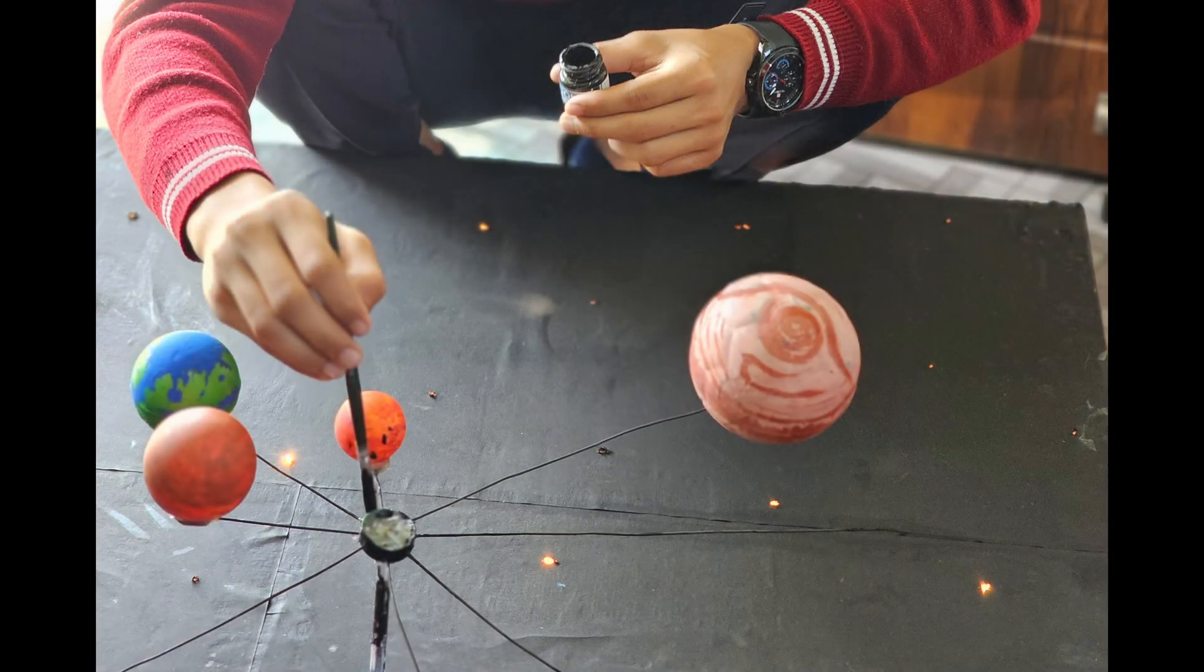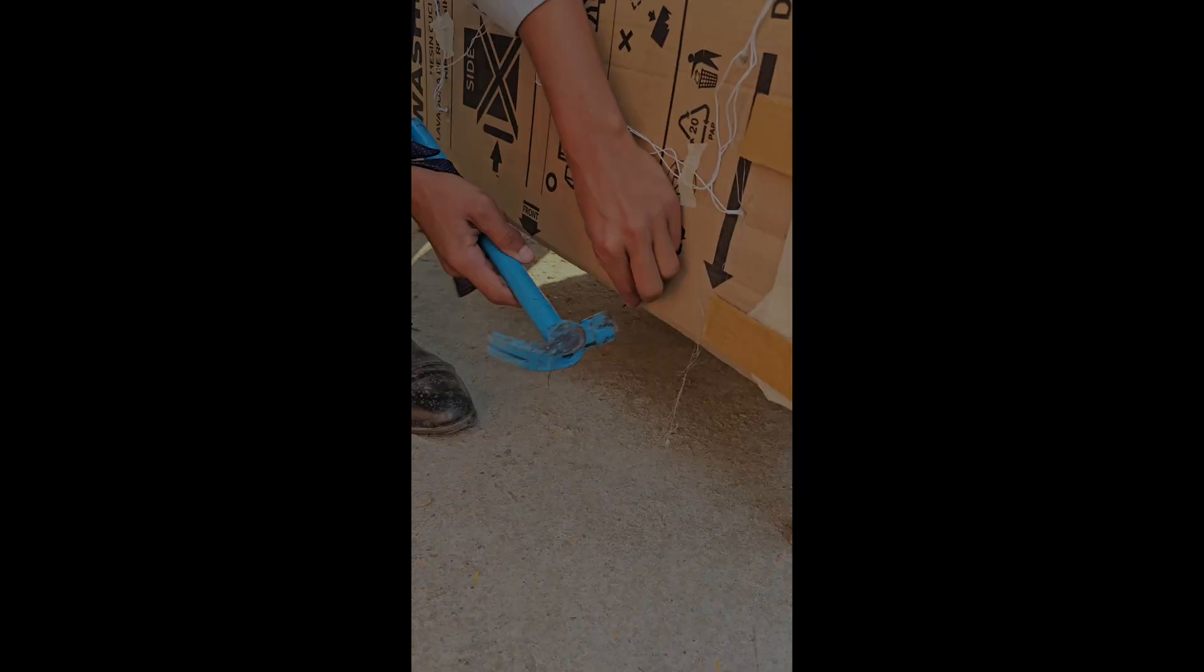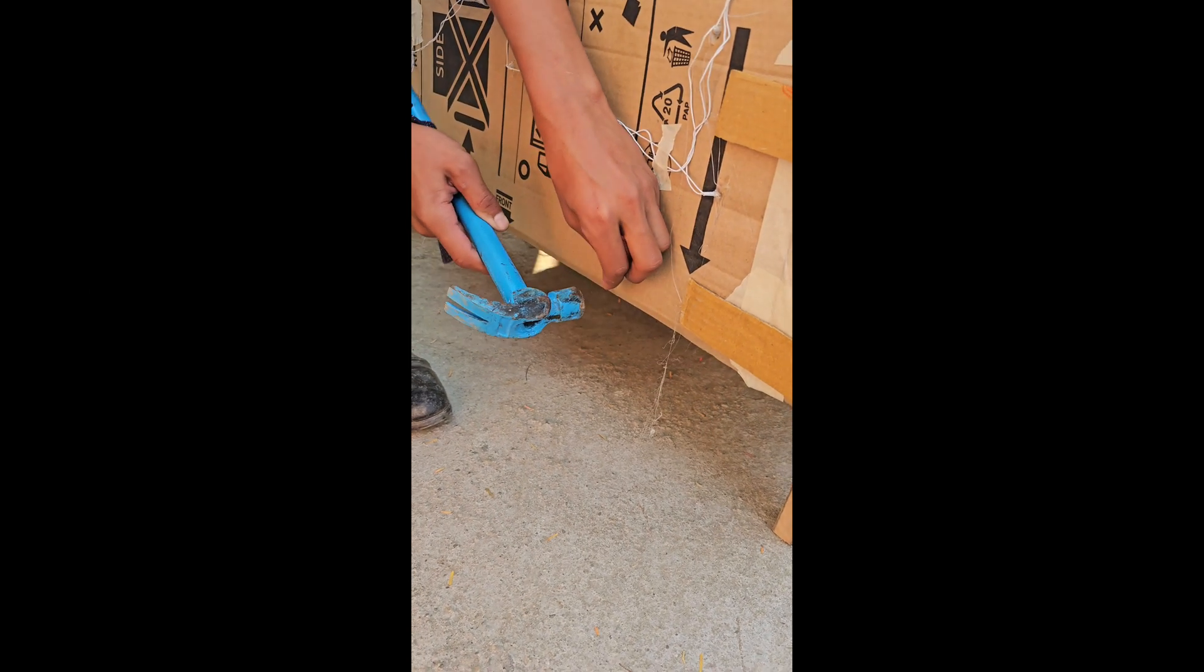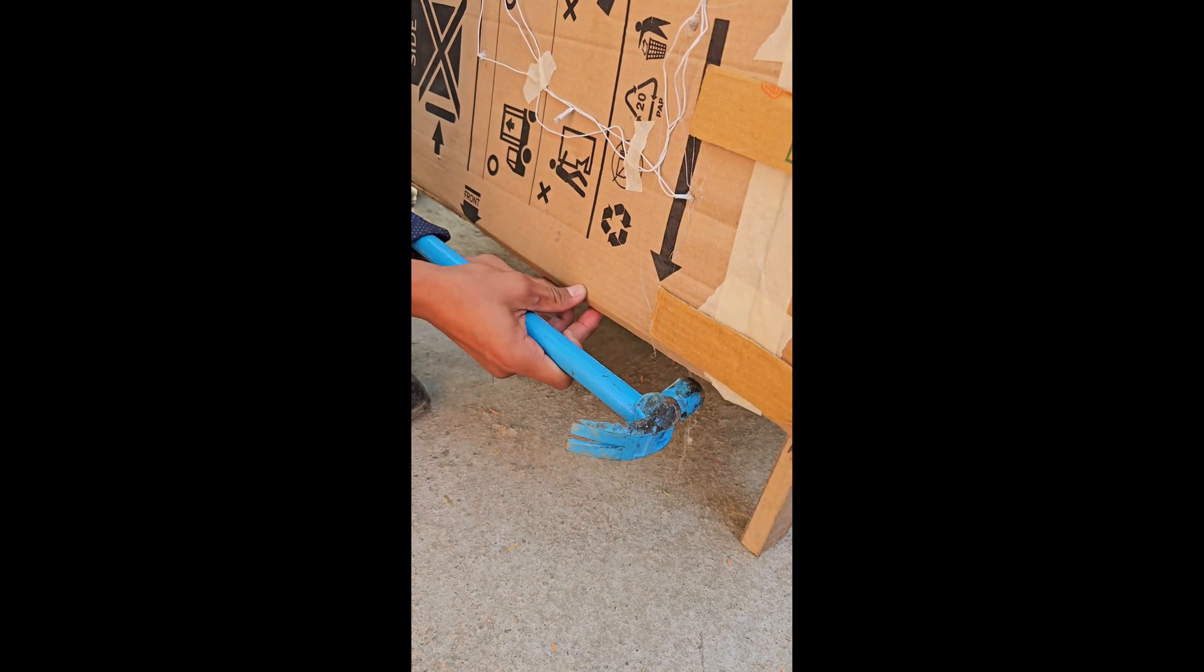Now we will paint the steel wire black to make it disappear and start covering the planets space to make infinity space and twinkling stars all around. Now it's all ready.